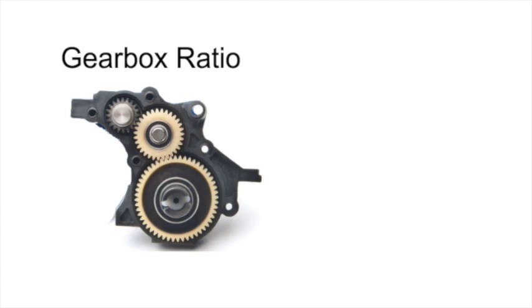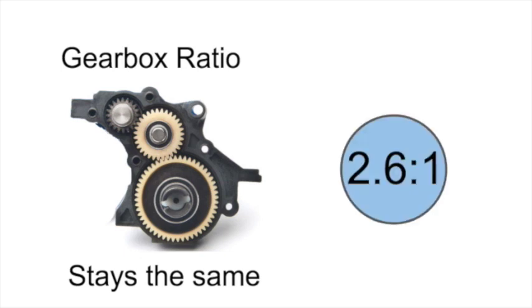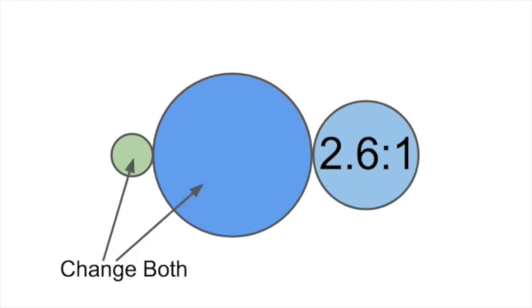The gearbox is all sealed together and you can't change anything in it, so the gearbox ratio always stays the same. You don't really have to worry about these three gears — just remember what the ratio is. For this associated gearbox it's 2.6-to-1, and most gearboxes for RC cars are right around that 2.5-to-1 ratio. Since we can't change the gears in the gearbox, we have three options to change the gearing for our car: we can change the pinion gear, we can change the spur gear, or we could change both of those gears.